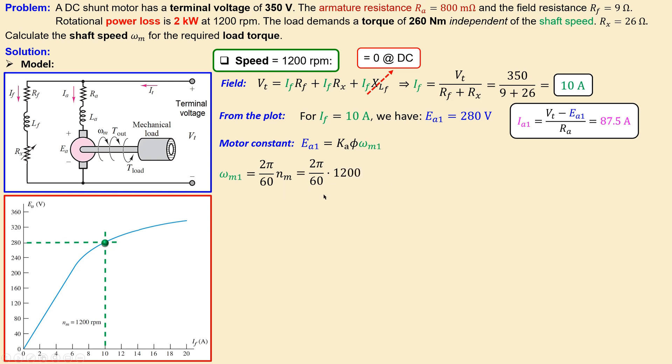We have the actual shaft speed in radians per second which will be 125.7 radians per second. Now I have the necessary information to calculate the motor constant. I can collect them together and then I have 2.228 volt-seconds. That is our motor constant. It will of course stay the same also in the next situation where we have a new shaft speed.